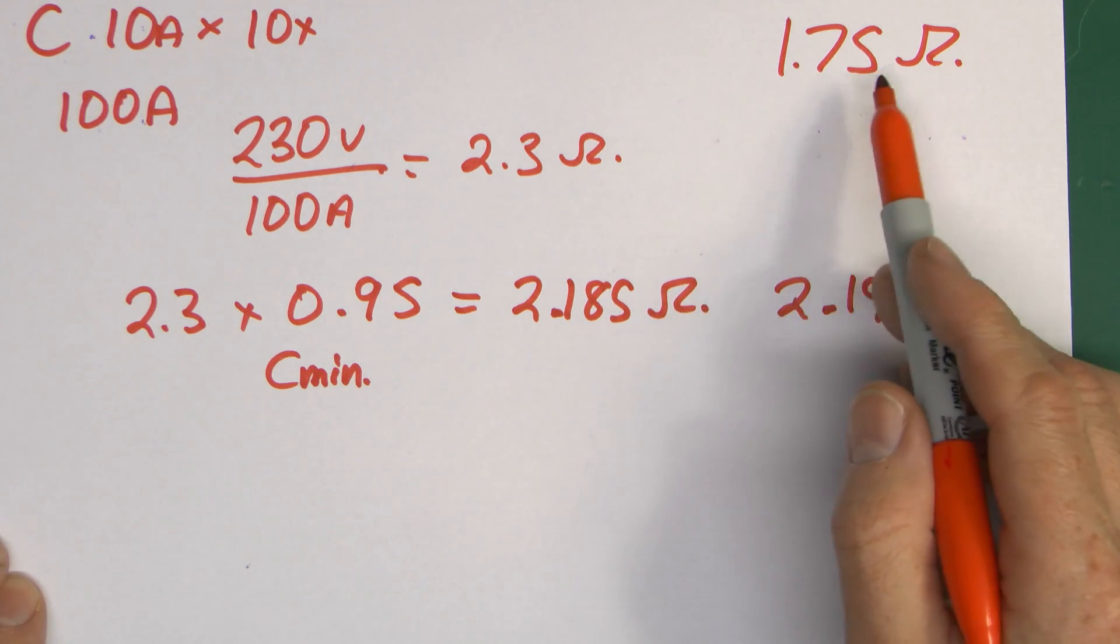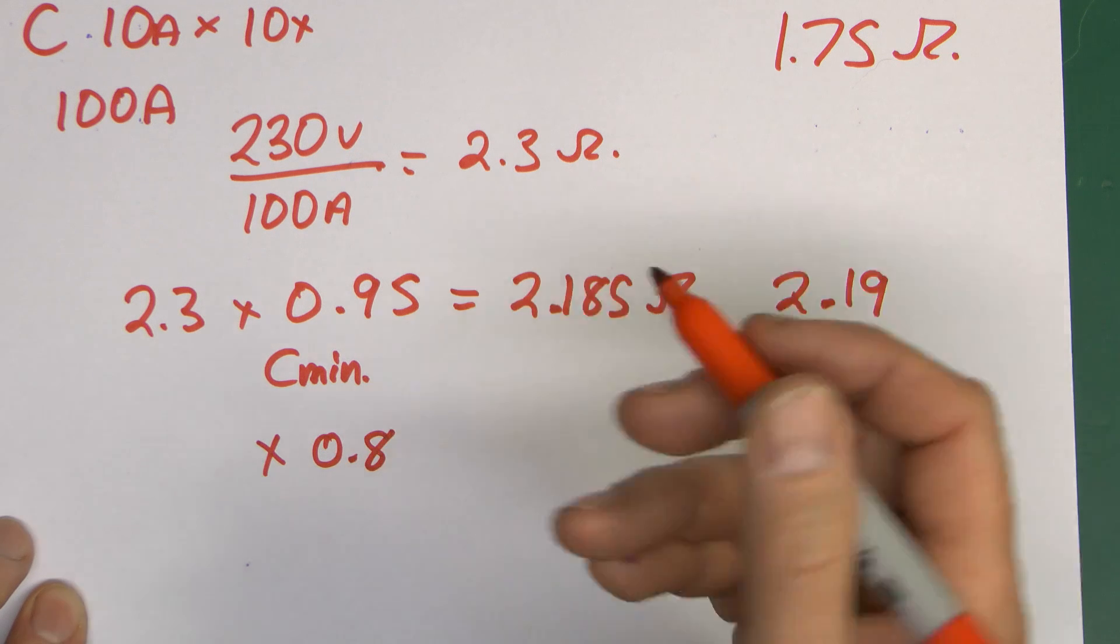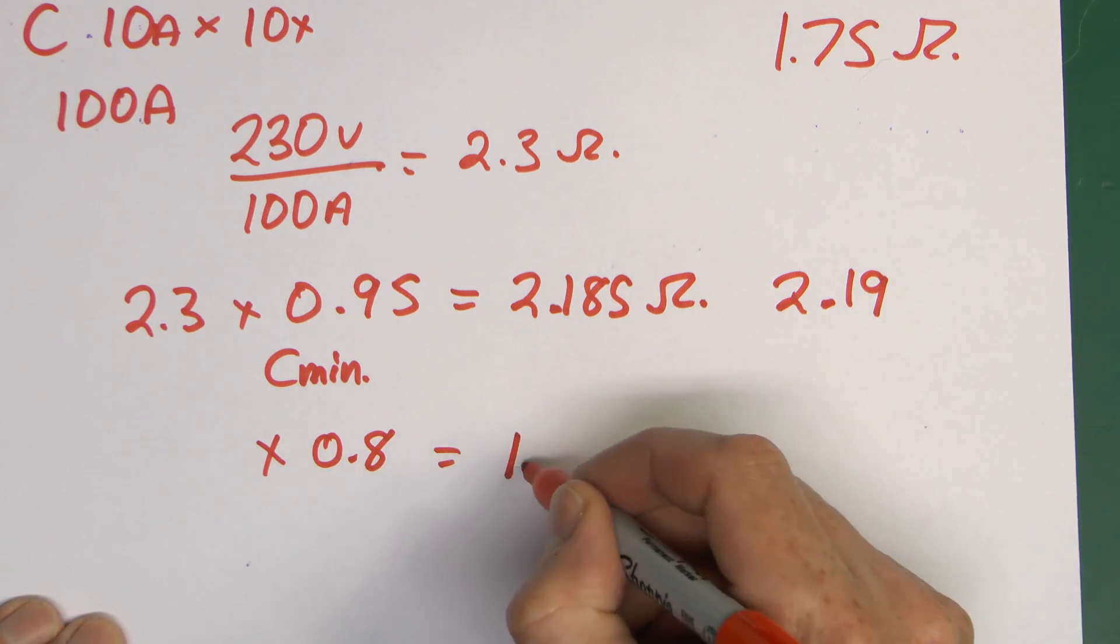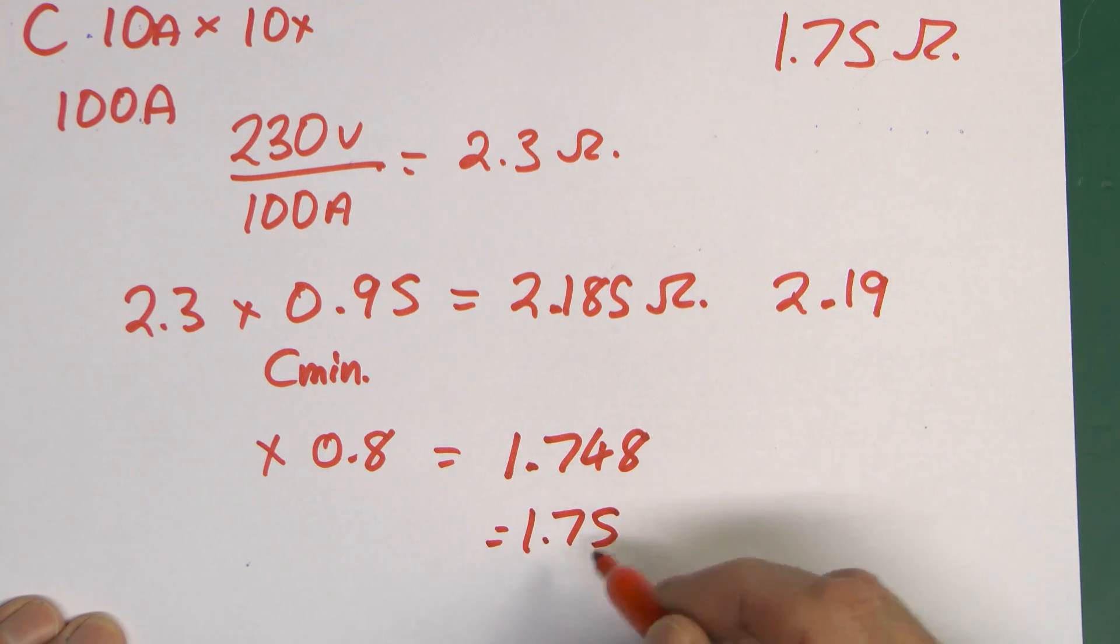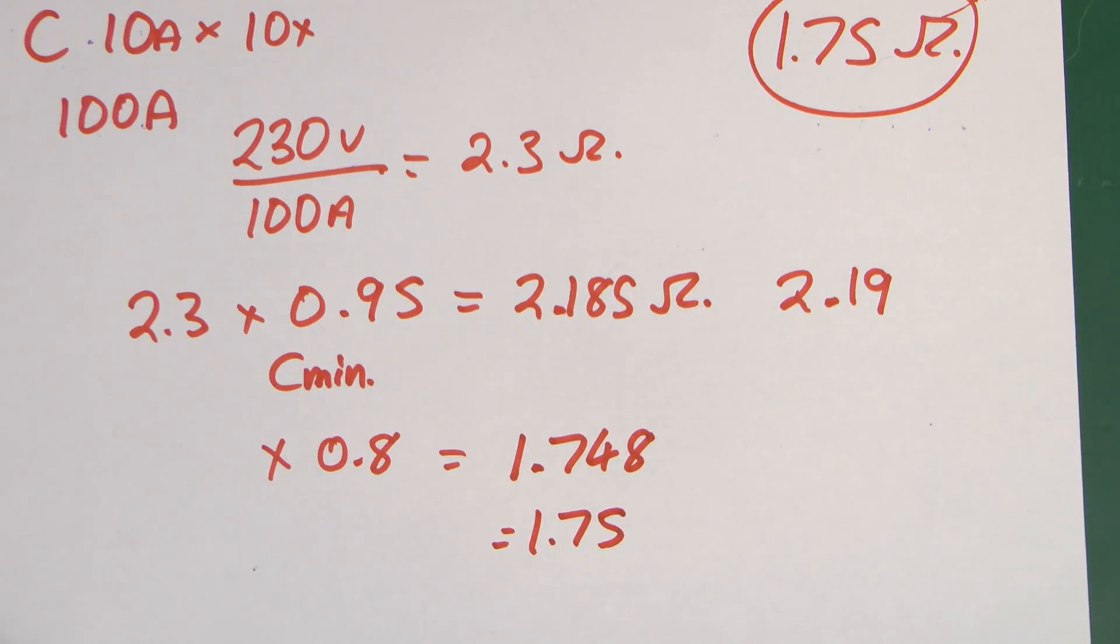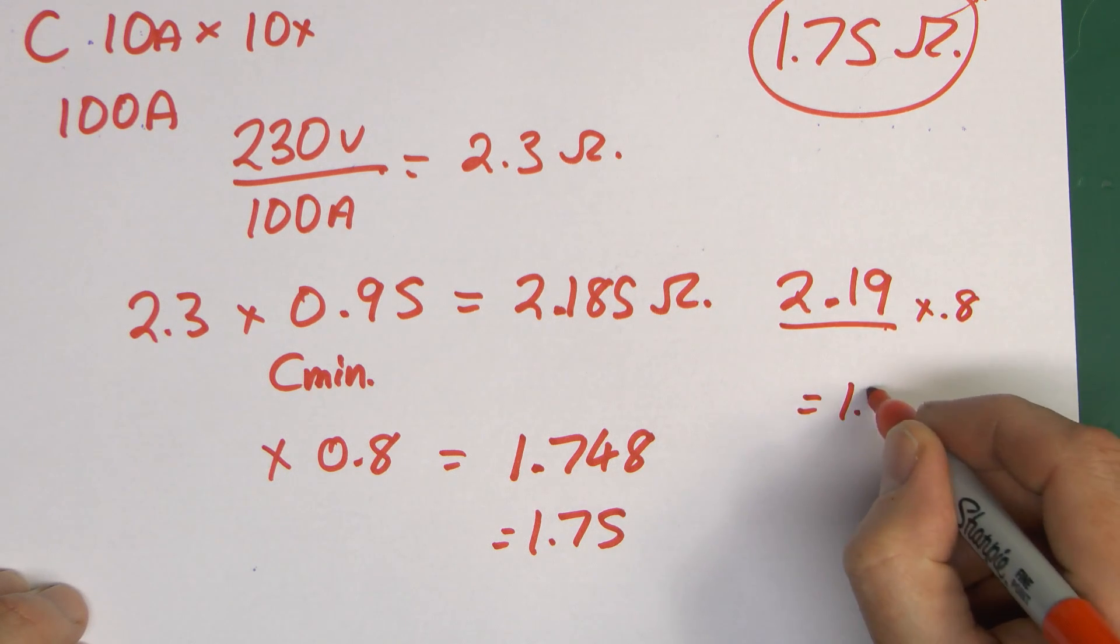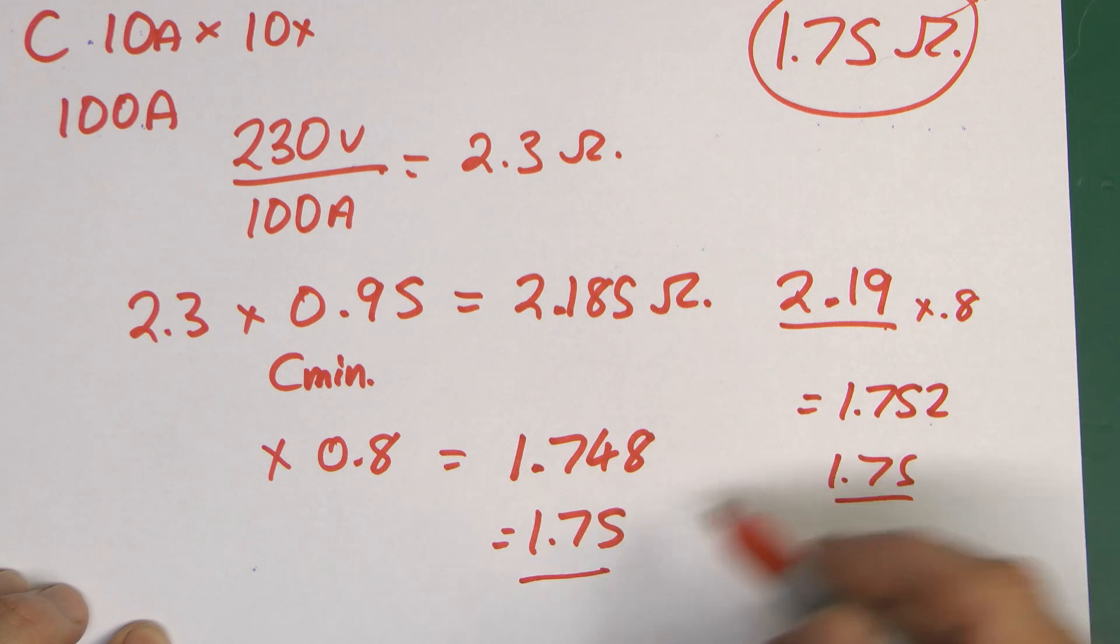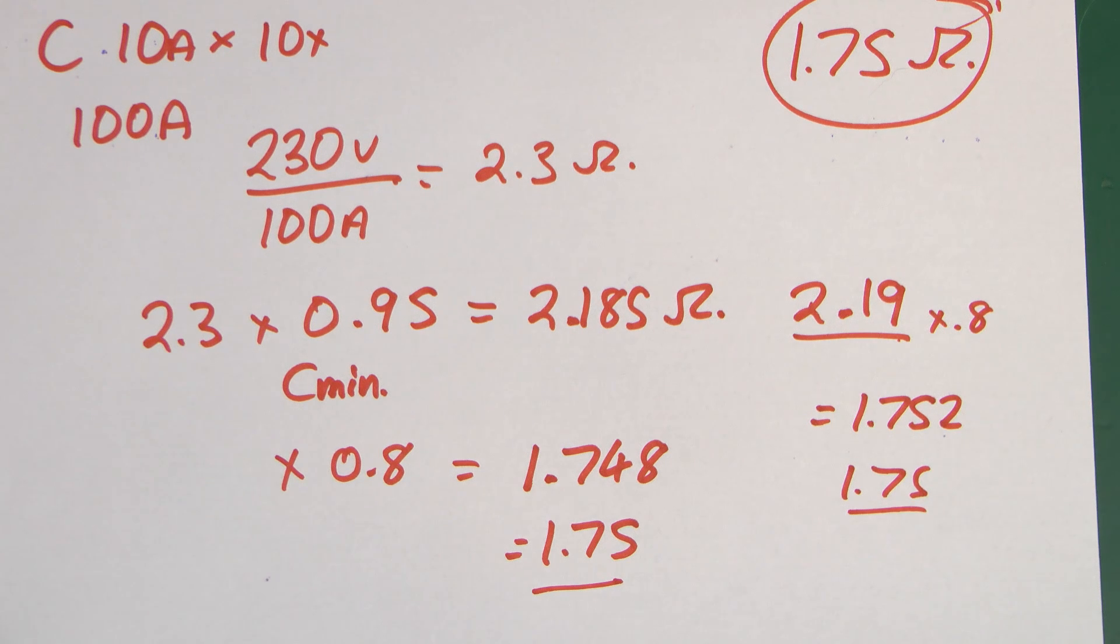And then to get the actual value we do normally use for an actual installation, again that's that 80% value, so multiplying by 0.8 or 80% basically. And if we use the full value here, the 2.185, then the value we get is 1.748. And again, we're going to just round that off to the two decimal places. 8 is obviously a fairly high number there, so we end up with 1.75, which again is what's printed on the sheet there. If you actually use the rounded off value of the 2.19 and multiply that by 0.8, then you actually get 1.752, which again is still 1.75. So in that particular case, you actually get the same value regardless of where you round it off. As I said before, it doesn't really matter. 0.01 ohms is not really going to change anything in any practical terms.